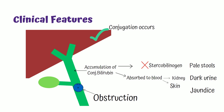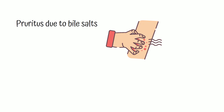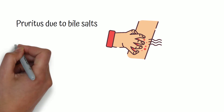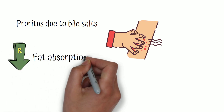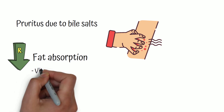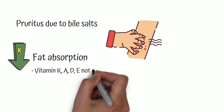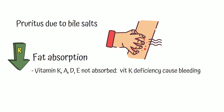The patient will also have pruritus due to bile salts, and you will see scratch marks on the body. Because bile is not sent to the intestine, fat absorption is impaired. Therefore, fat-soluble vitamins — vitamin K, vitamin A, vitamin D, and vitamin E — will decrease. Vitamin K deficiency results in bleeding manifestations.